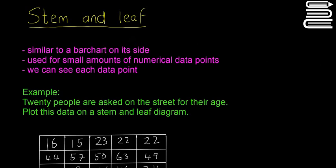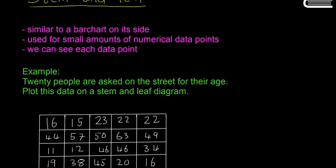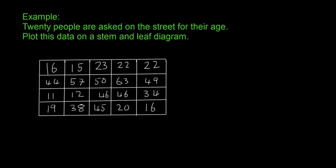I'm going to do an example—it's the best way to see how stem and leaf diagrams work. In this example, twenty people are asked on the street for their age, and we'll plot this data on a stem and leaf diagram.